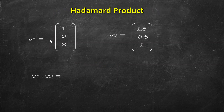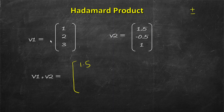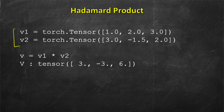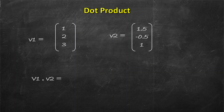Next let's look at the Hadamard product. A Hadamard product is similar to simple addition or subtraction of vectors in that it operates element by element, but it does element-by-element multiplication. So 1 multiplied by 1.5 is 1.5, 2 multiplied by minus 0.5 is minus 1, and so on. The output is of the same dimension as both input vectors. In PyTorch you simply create the two vectors of the same shape and size and use the multiplication symbol to get the Hadamard product.